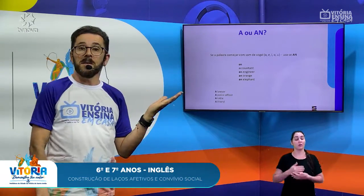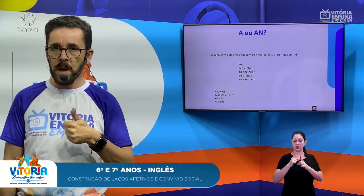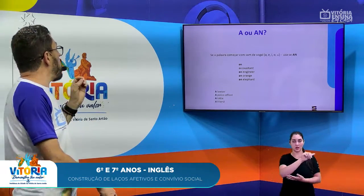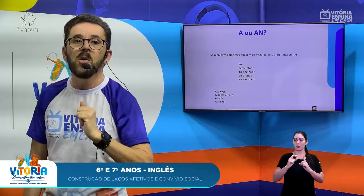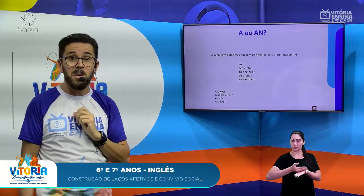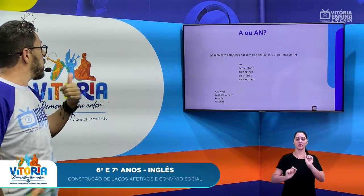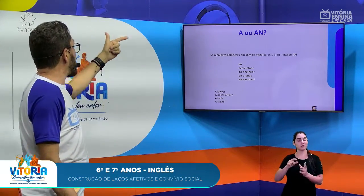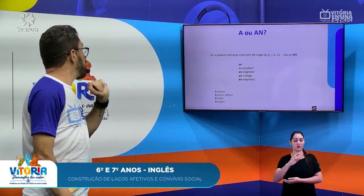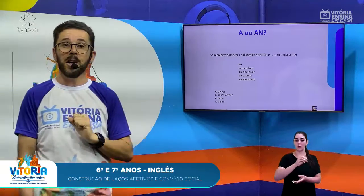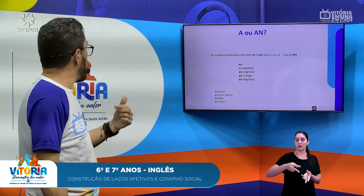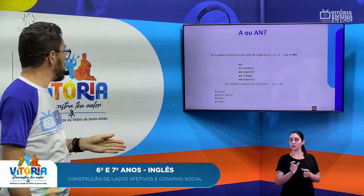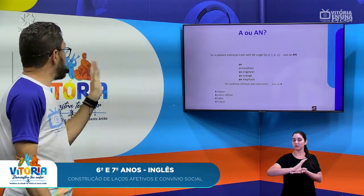Se você observar, tanto no primeiro grupo de palavras como no segundo tem artigo. So, quando usar "a" e quando usar "an"? Você vai usar "an" quando as palavras que vierem após começarem por uma vogal: a, e, i, o, u. A palavra "accountant" começa por vogal, "engineer" também, "orange" também, "elephant" também. Porém, o segundo grupo de palavras todas começam por consoante: "a lawyer", "a police officer", "a table", "a friend".